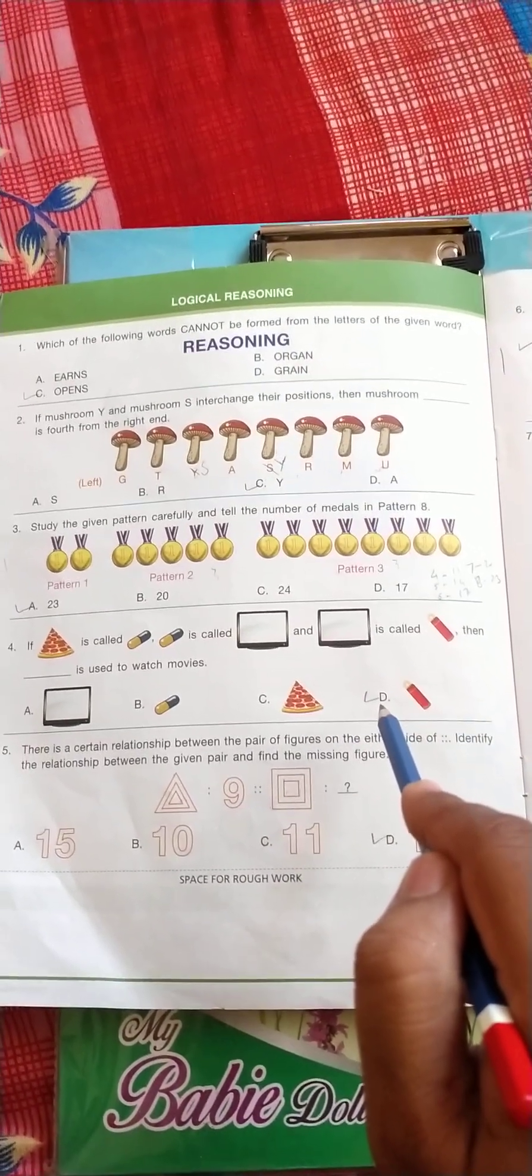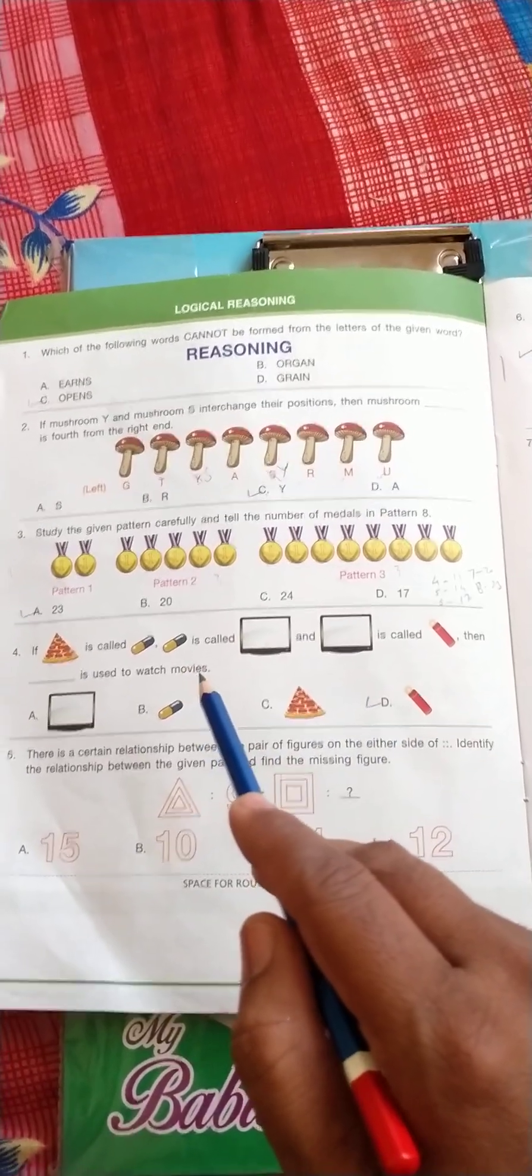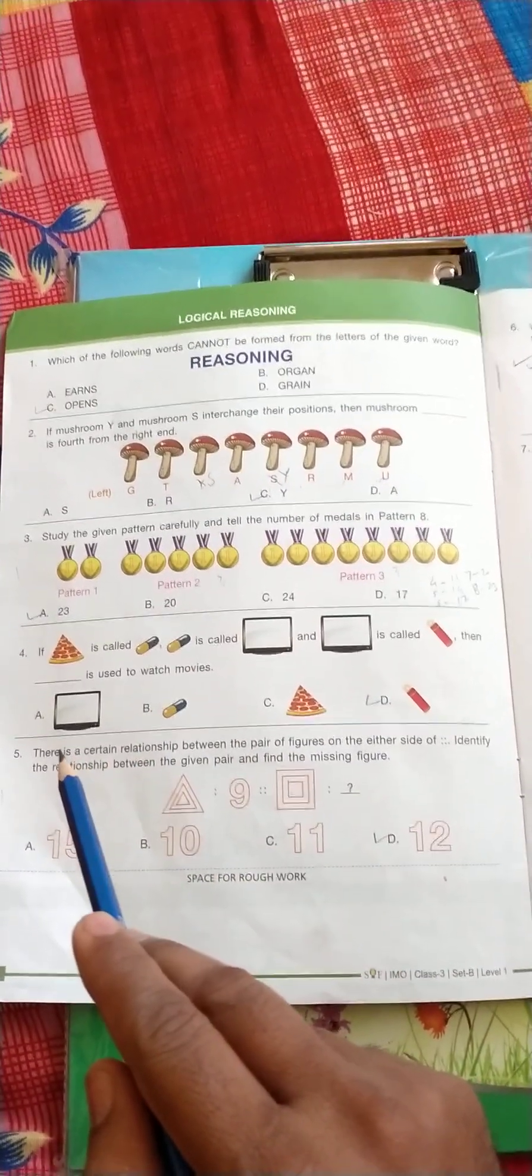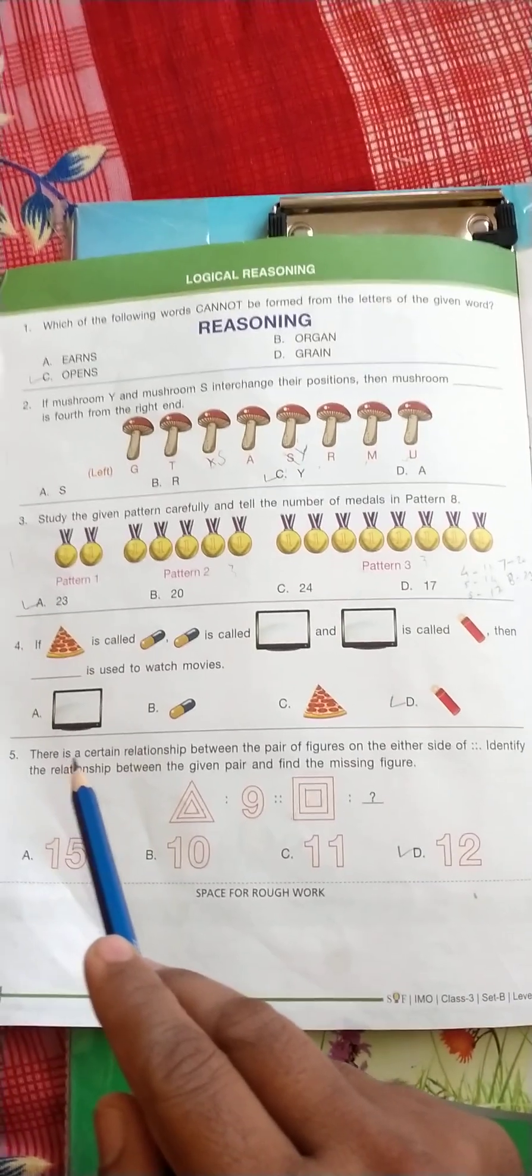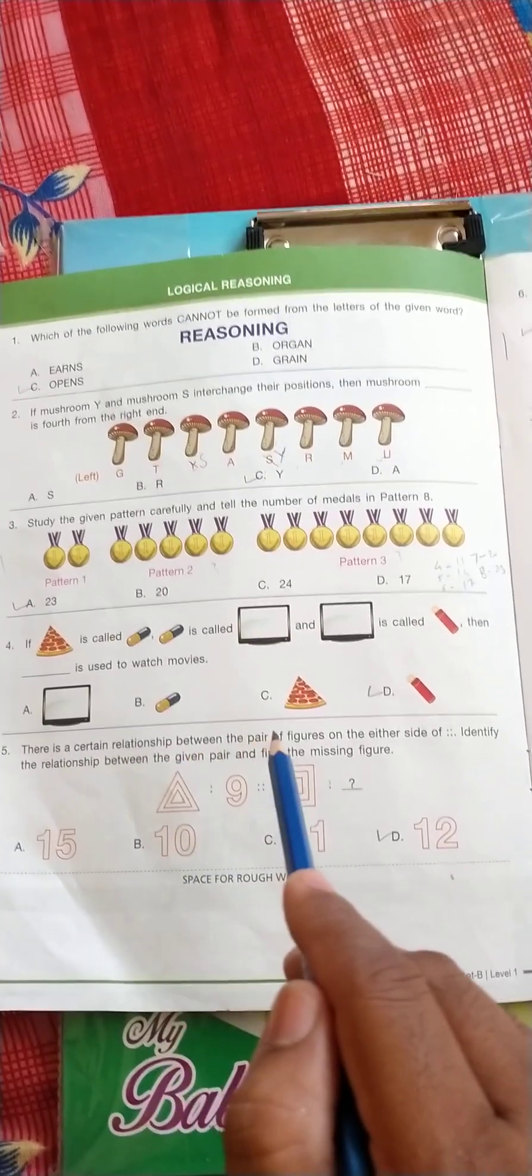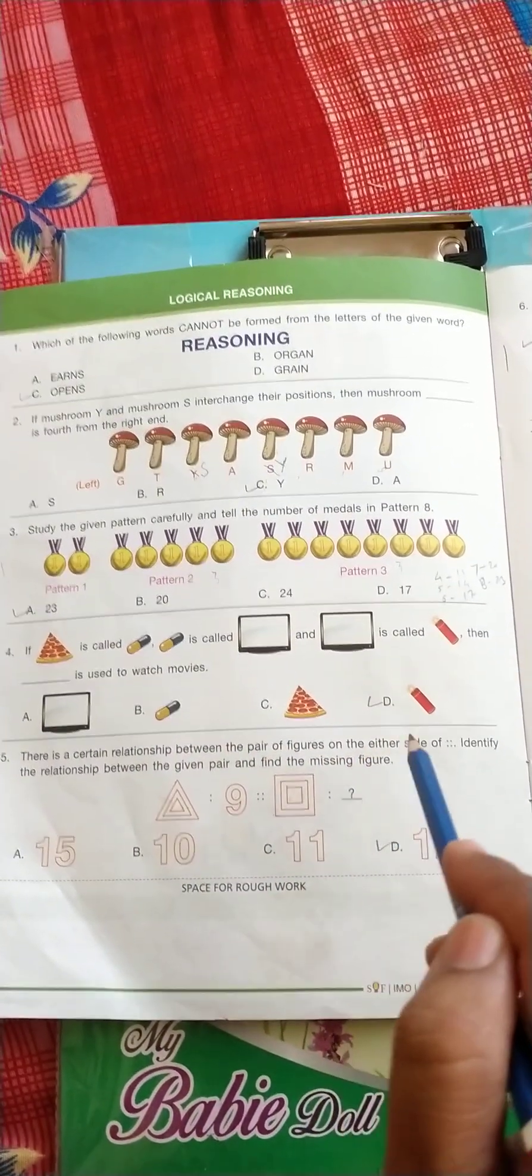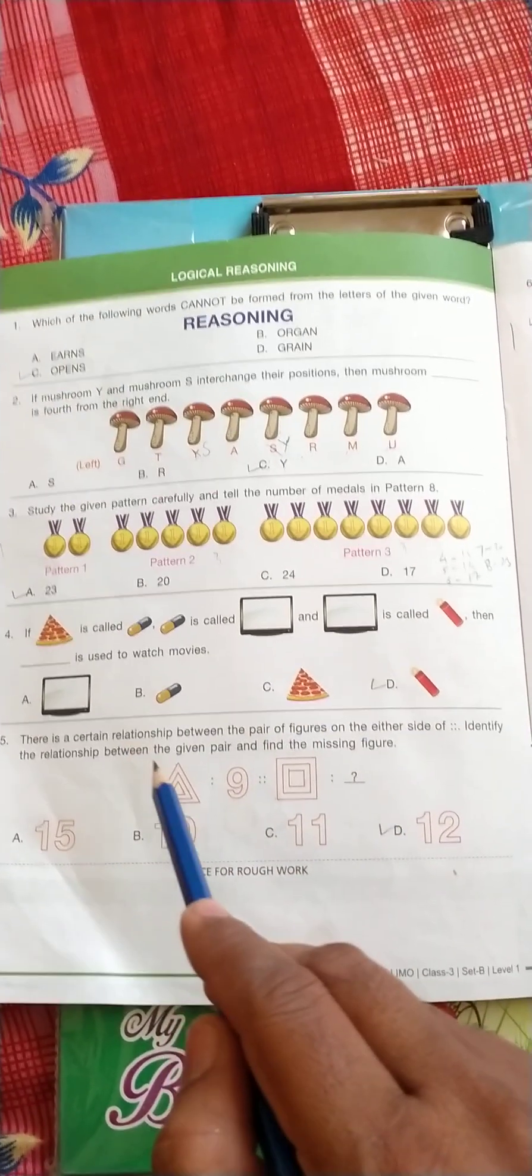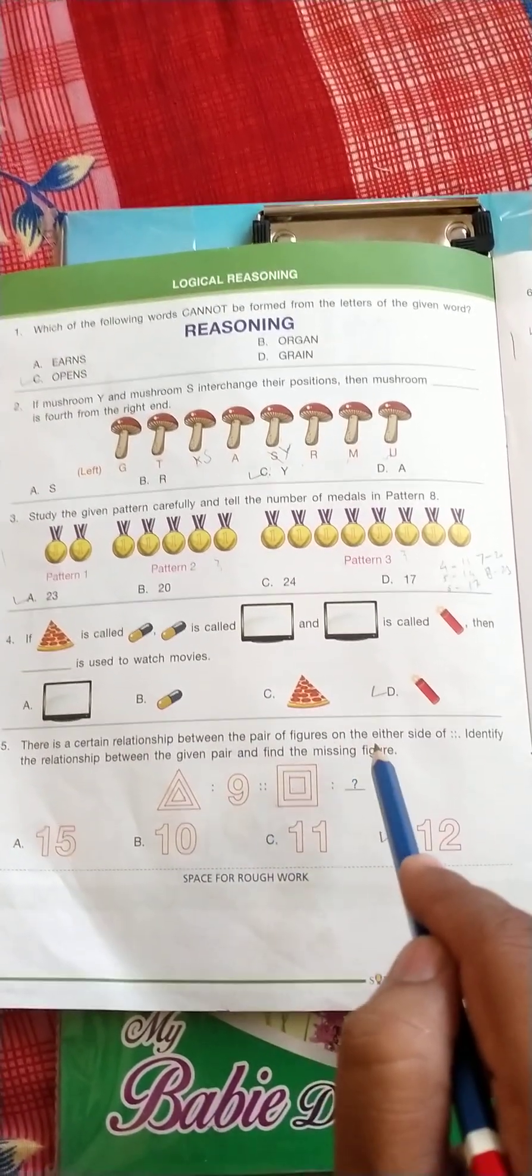Question number five: there is a certain relationship between the pair of figures on the either side. Identify the relationship between the given pair and find the missing number.